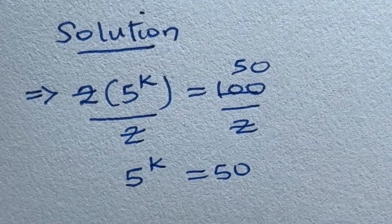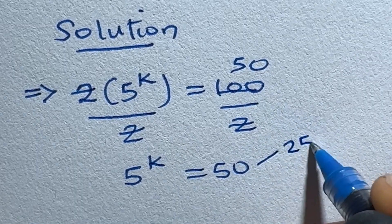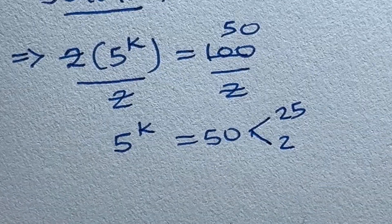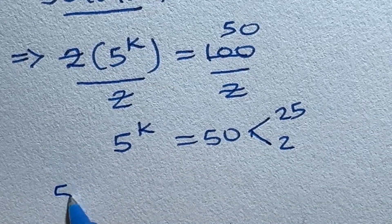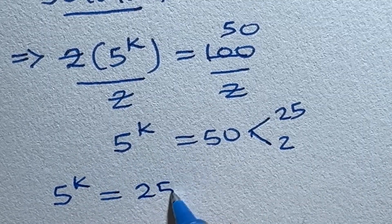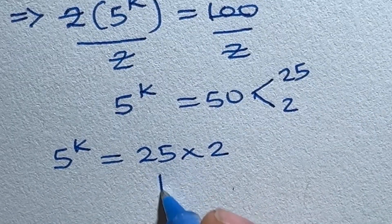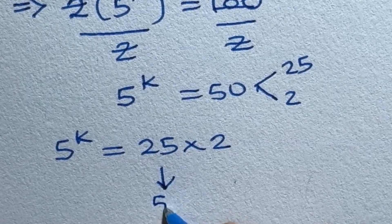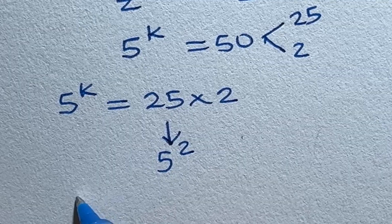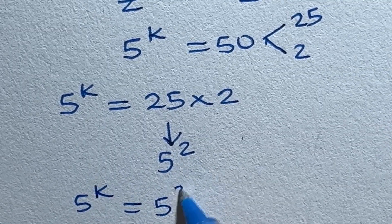We can break down 50 into the product of 25 times 2. So it becomes 5 raised to the power of k is equal to 25 times 2. And 25 itself can be expressed as 5 raised to the power of 2, so 5 raised to the power of k is equal to 5 raised to the power of 2 times 2.